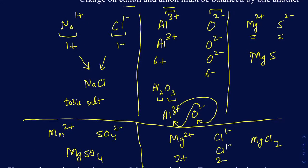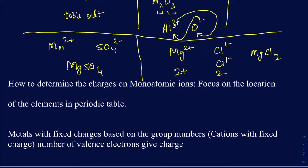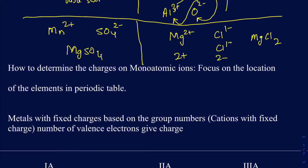How do you know what the charge is going to be on those cations and anions? For some of them, you can focus on their position in the periodic table, especially for monatomic ions. If you have an ion — whether cation or anion — coming from a single atom, then you can rely on its location in the periodic table.